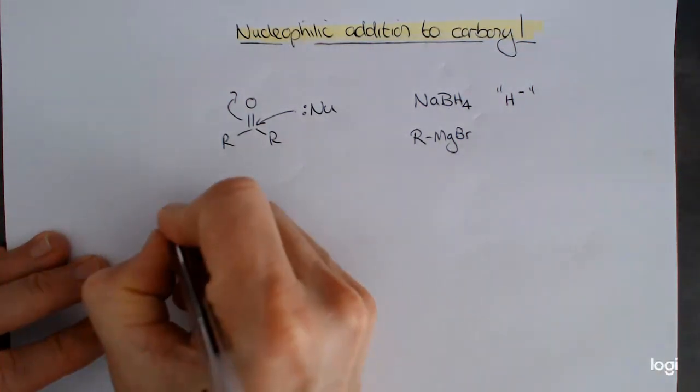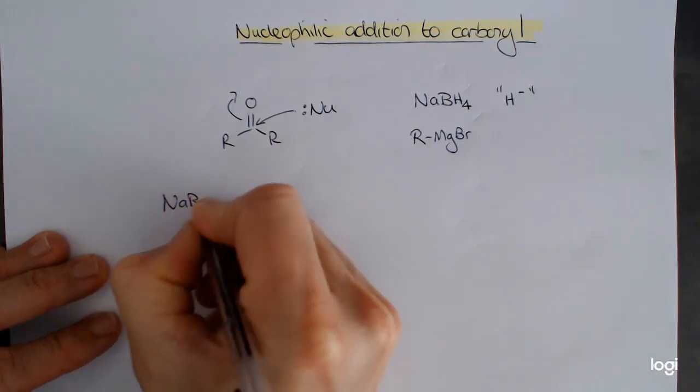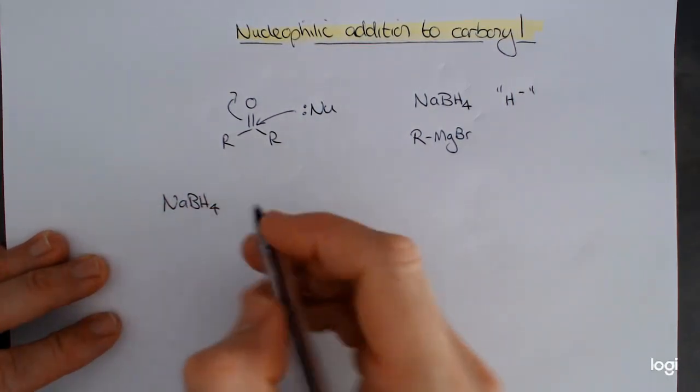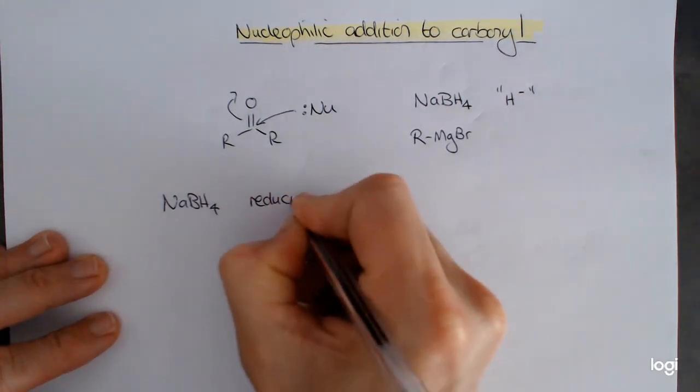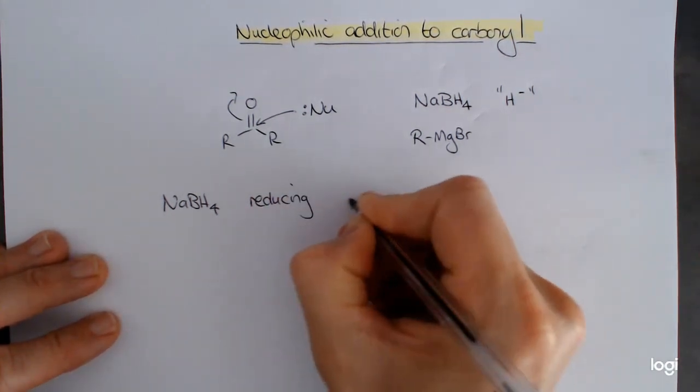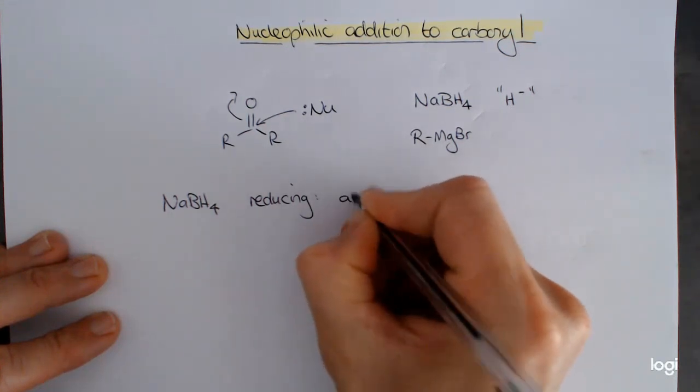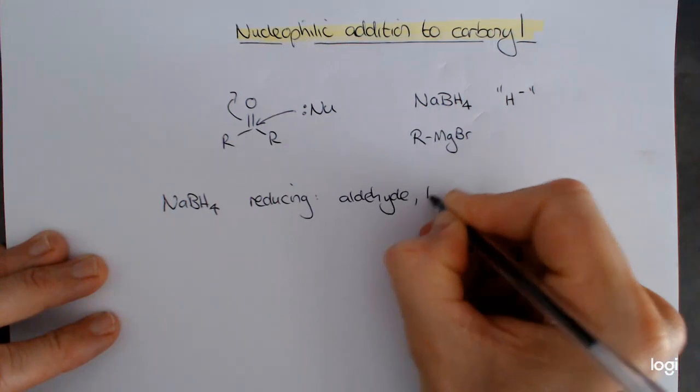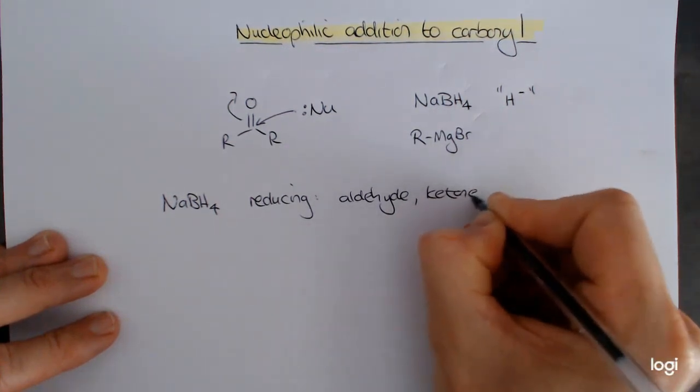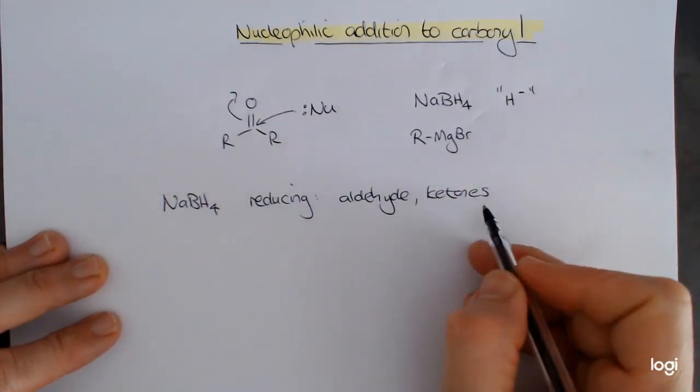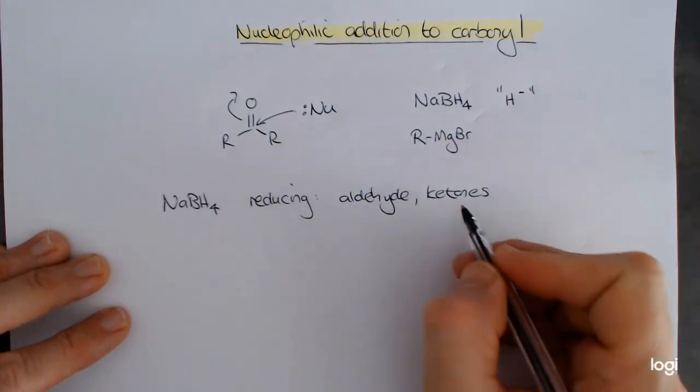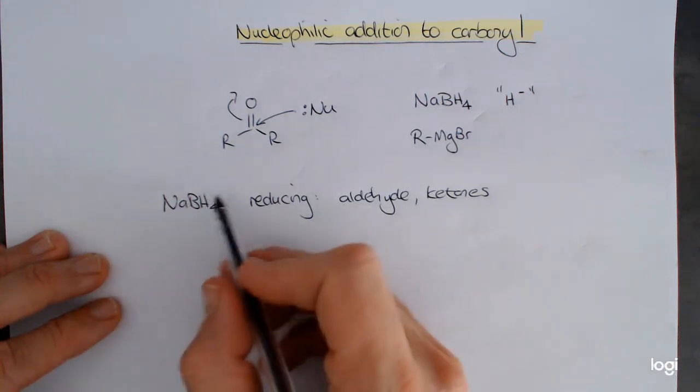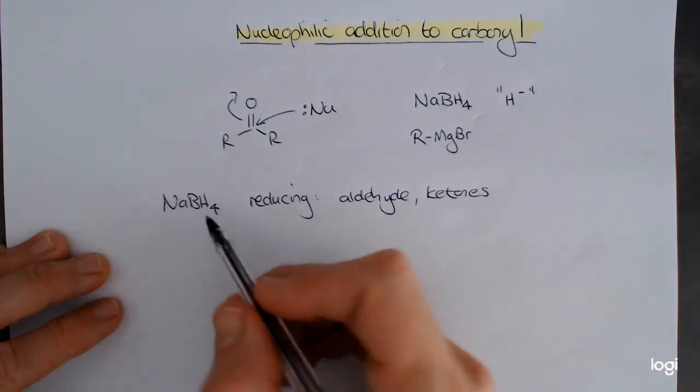So starting with sodium borohydride, sodium borohydride is an inorganic salt, which is very good at reducing typically aldehydes and ketones in organic chemistry. But what is actually more important, there are actually other groups that it will reduce. What's more important is actually to know what it doesn't reduce.